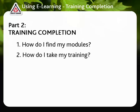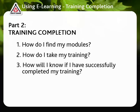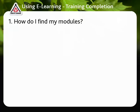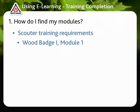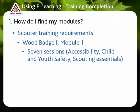Part 2 – Training Completion. This part of the video will go over how to find your modules, how to complete your training, and how to make sure you have completed your training successfully. All new Scouters must complete Wood Badge 1 training, which includes 5 modules. Wood Badge 1 Module 1 must be completed by all Scouters. This module contains 7 sessions, which provide information on accessibility, ongoing safety, support networks, and tips for how to be successful in your new role. Module 1 will take about 3–4 hours to complete.